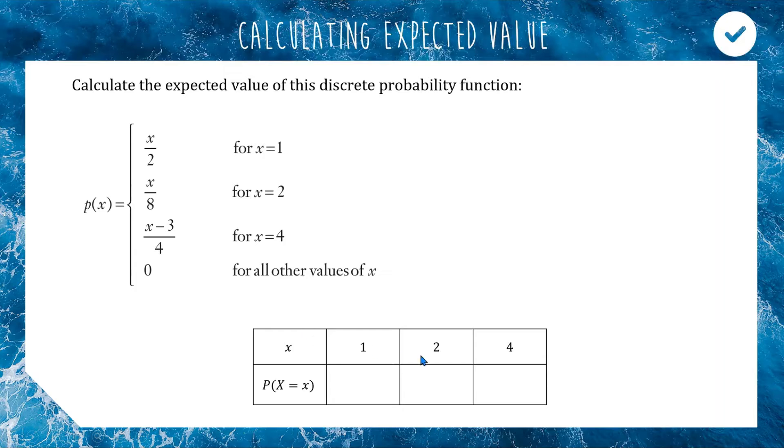We have our outcomes which are 1, 2, and 4. We'll calculate our probabilities. When x equals 1, the function says x divided by 2, which is 1 divided by 2, which is a half. When x equals 2, we do x divided by 8, so 2 out of 8 equals a quarter. For input 4, the output is 4 minus 3 divided by 4, which gives us one quarter.